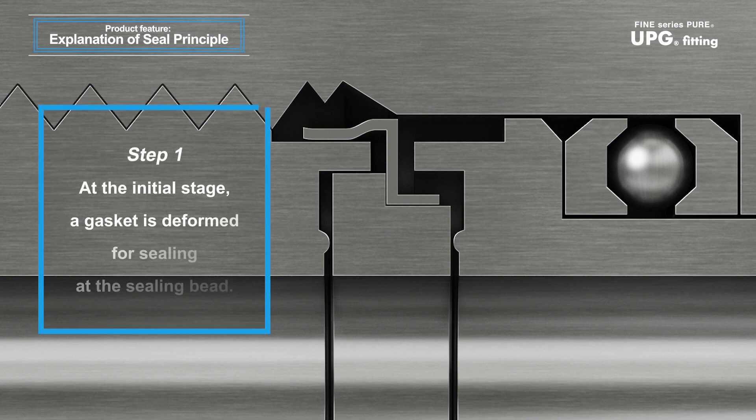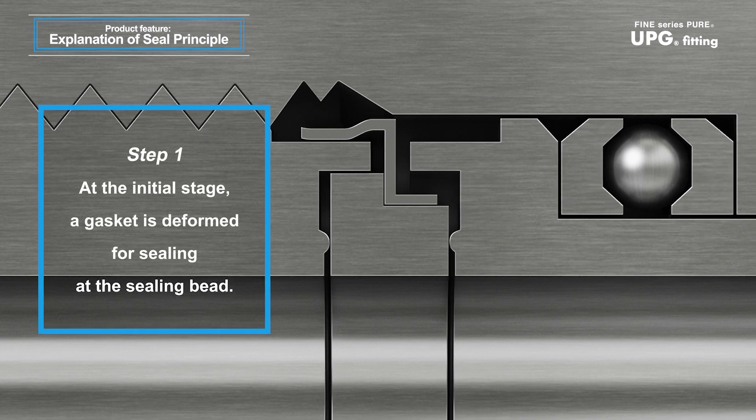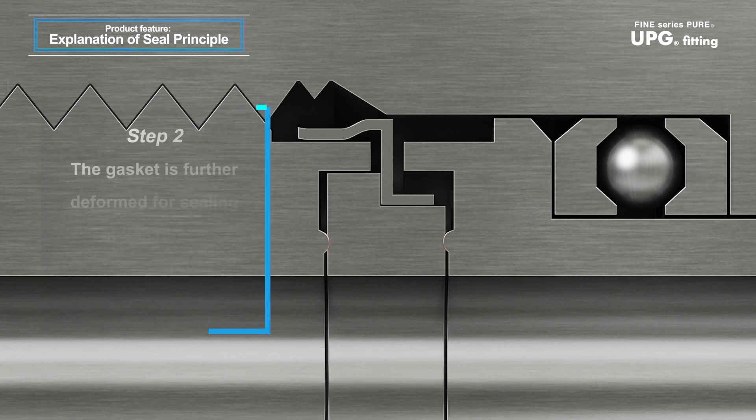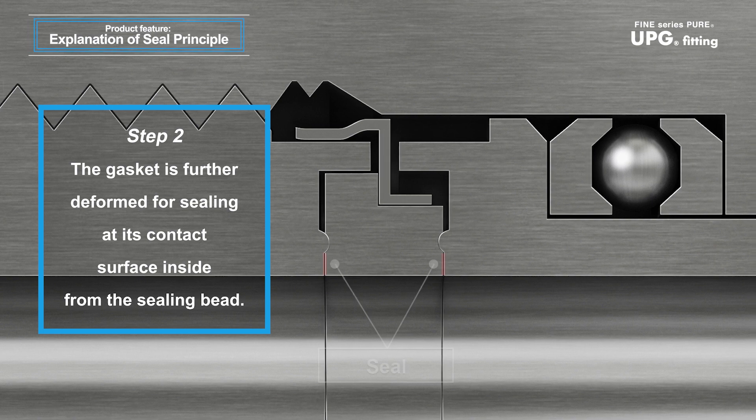Step 1: At the initial stage of fastening the nut, the gasket is deformed for sealing at the rounded parts. Step 2: Then the gasket is further deformed for sealing at its contact surfaces inside from the rounded parts.